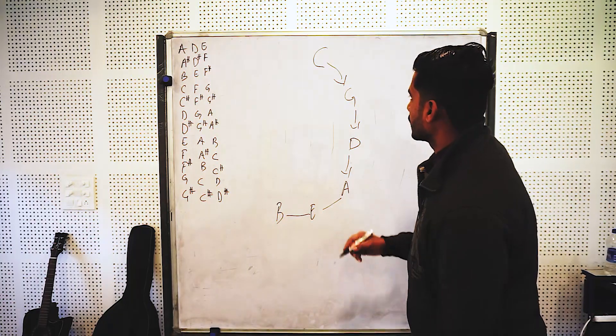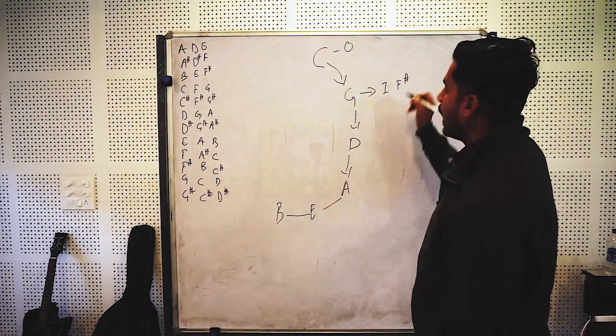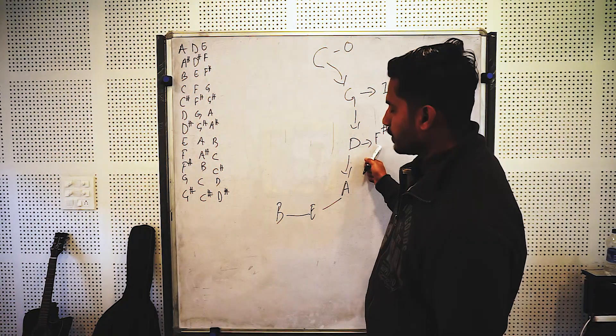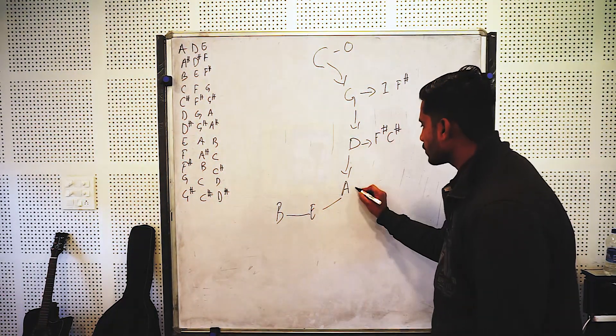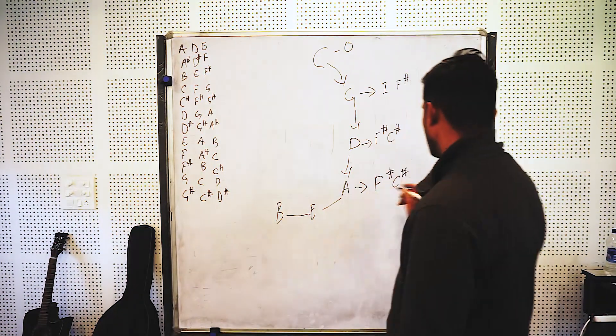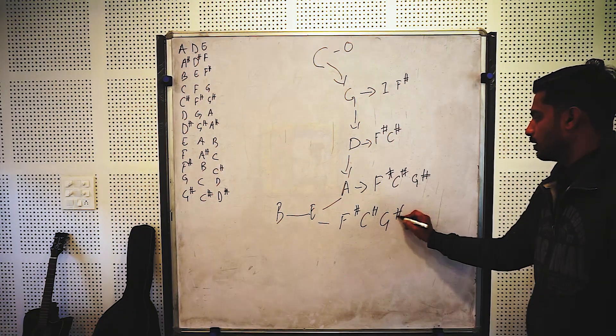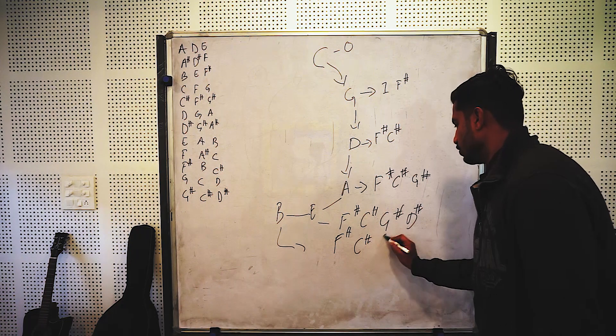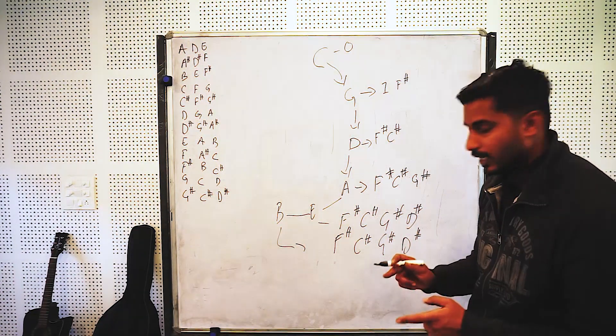Now what do we do with the sharps? In C, we know that we have zero sharps. Then in G, we have one sharp, that is F sharp. In D, we have two sharps: F sharp and C sharp. In A, we have three sharps: F sharp, C sharp, and G sharp. In E, we have four sharps: F sharp, C sharp, G sharp, and D sharp. And in B, you will have five sharps: F sharp, C sharp, G sharp, D sharp, and A sharp.